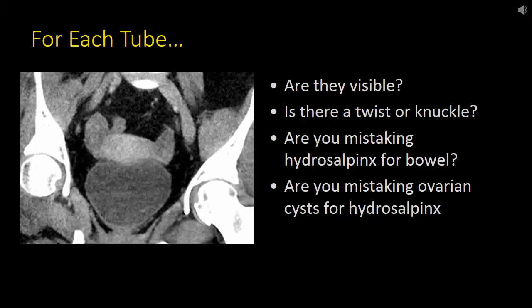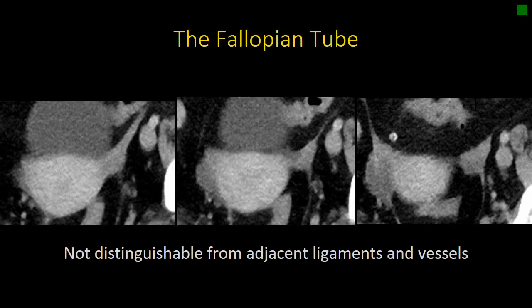Now let's talk about the fallopian tube. The fallopian tubes are often difficult to distinguish from their adjacent structures. When evaluating the tube, you want to first ask: are they visible? If they are visible, you want to try and decide why they're visible. Is there a twist? Is there edema? Is there hydrosalpinx? Are you mistaking an ovarian cyst for hydrosalpinx, or vice versa? To help you understand where the fallopian tubes are, we'll use some basic references.